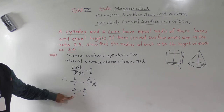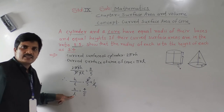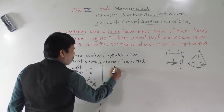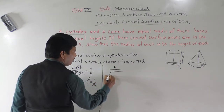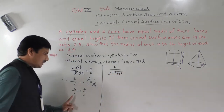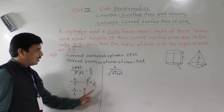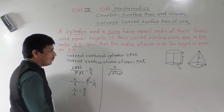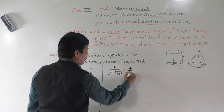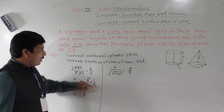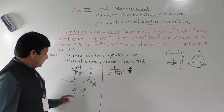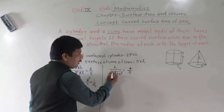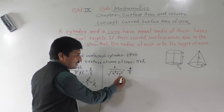Now we substitute the value of l. Slant height l equals the square root of (h² + r²). So h ÷ √(h² + r²) = 4 ÷ 5. To cancel the square root, we take the square of both sides (LHS and RHS). That gives: h² ÷ (h² + r²) = 16 ÷ 25.